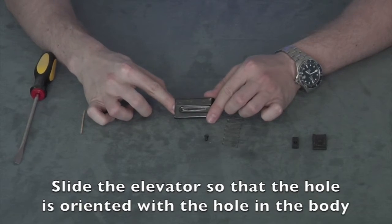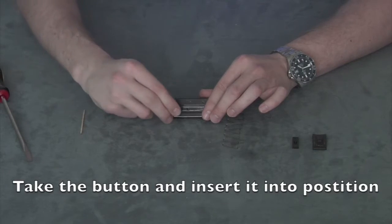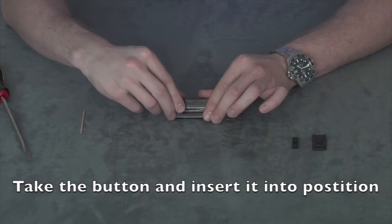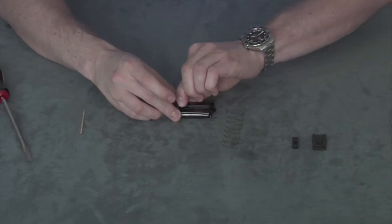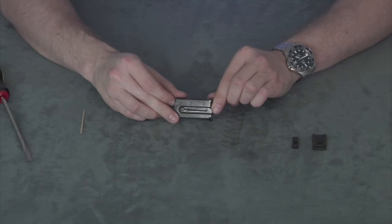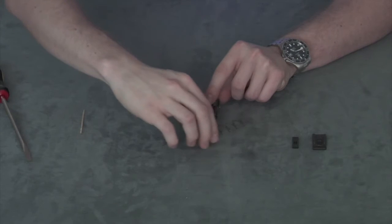Slide the elevator in so that the hole is oriented with the hole inside of the body. Then take the button and insert it into position. Once it is all the way in, slide the elevator to the top of the magazine.